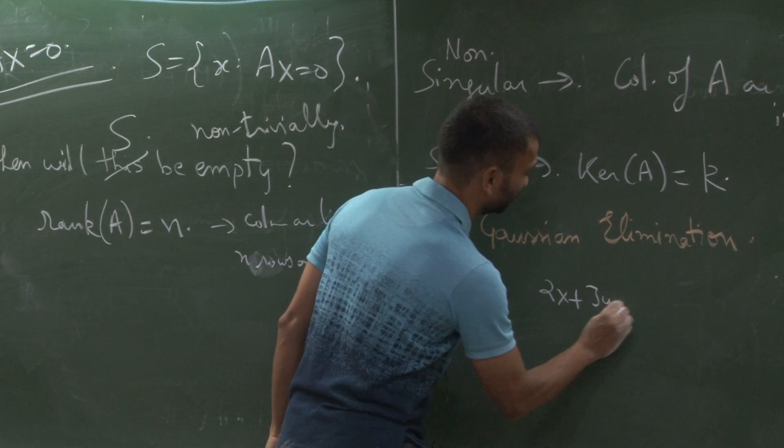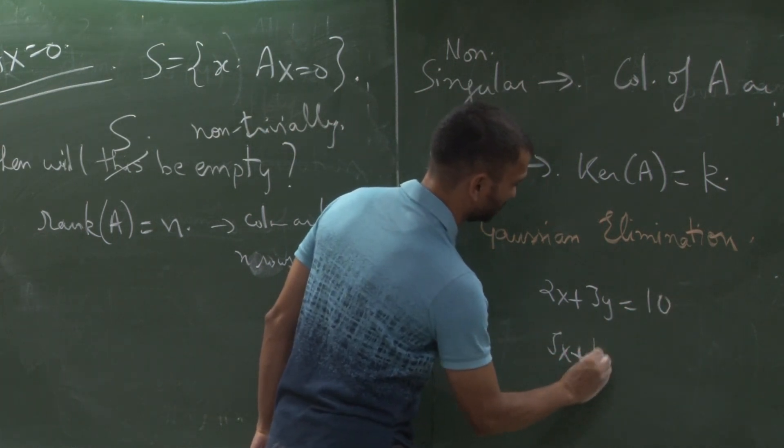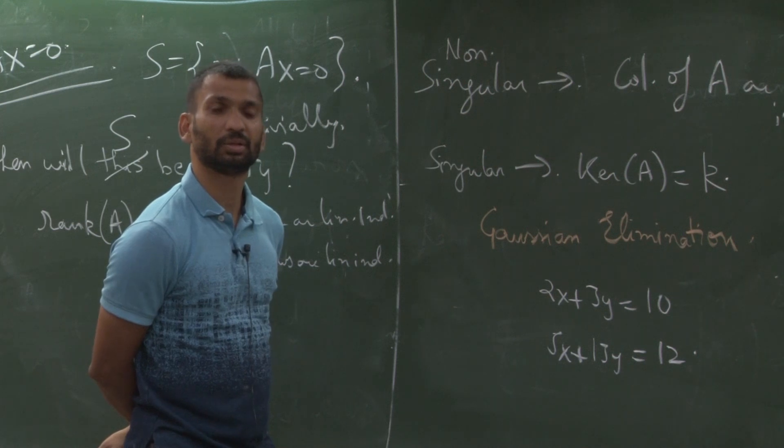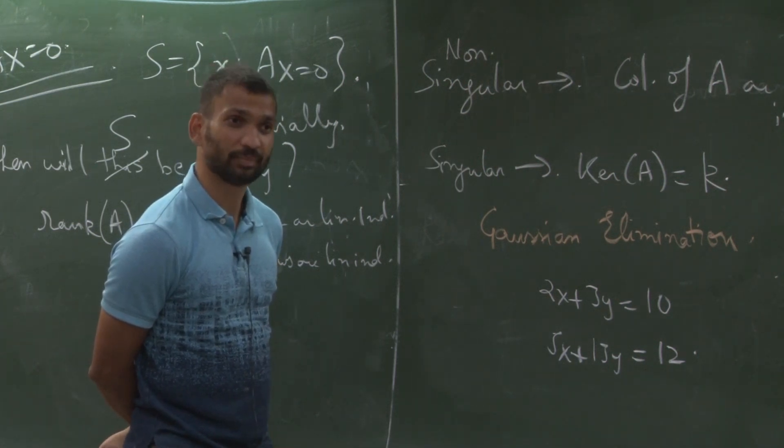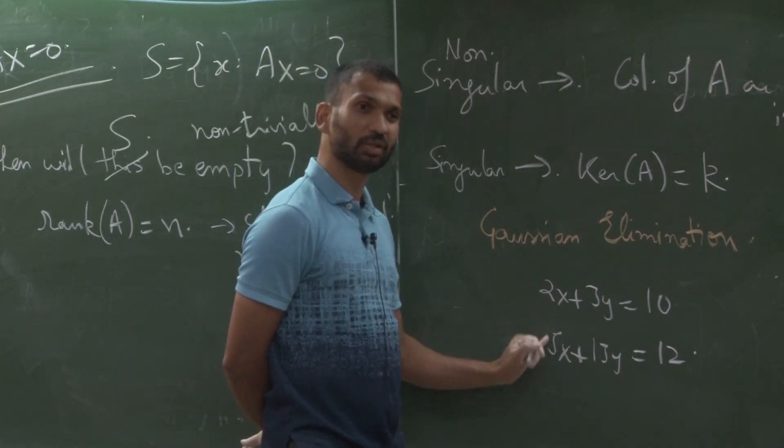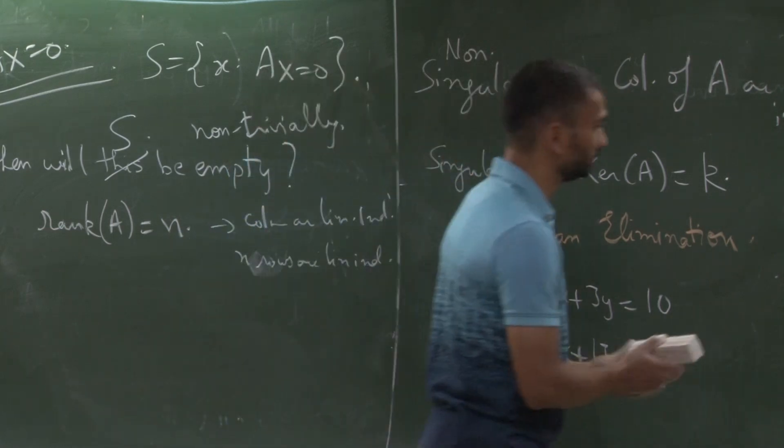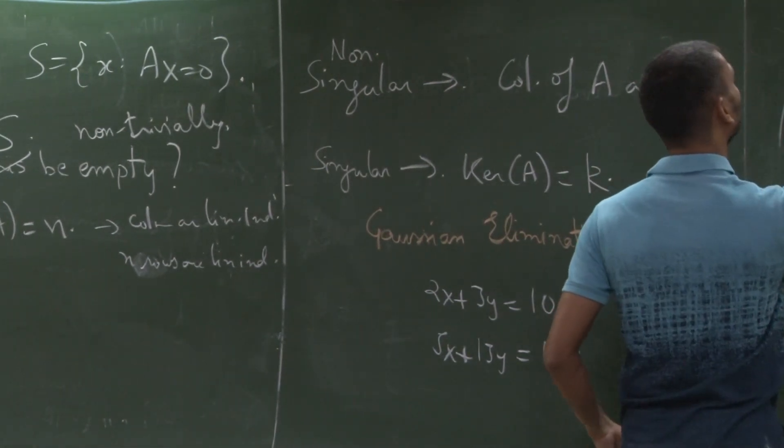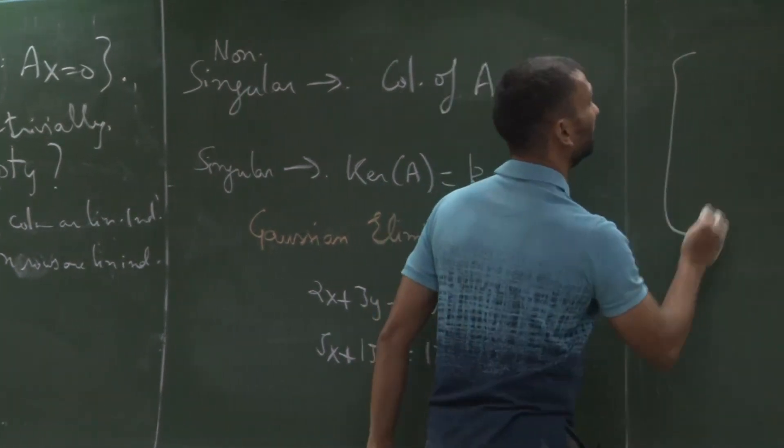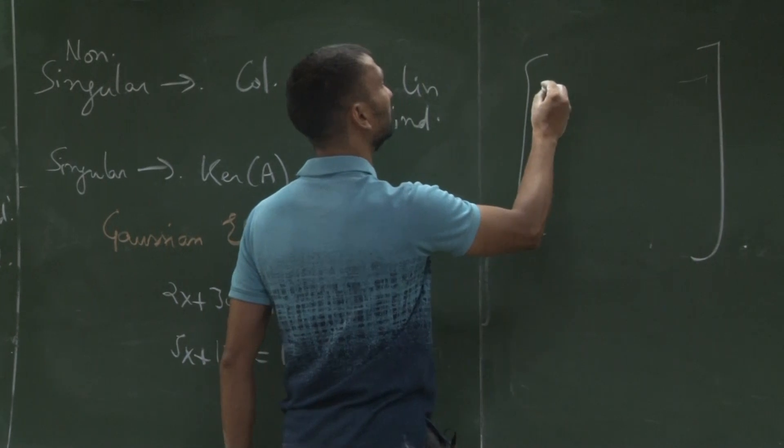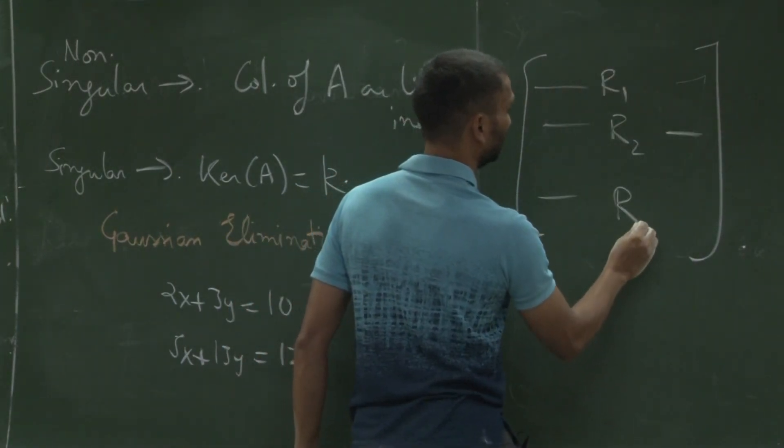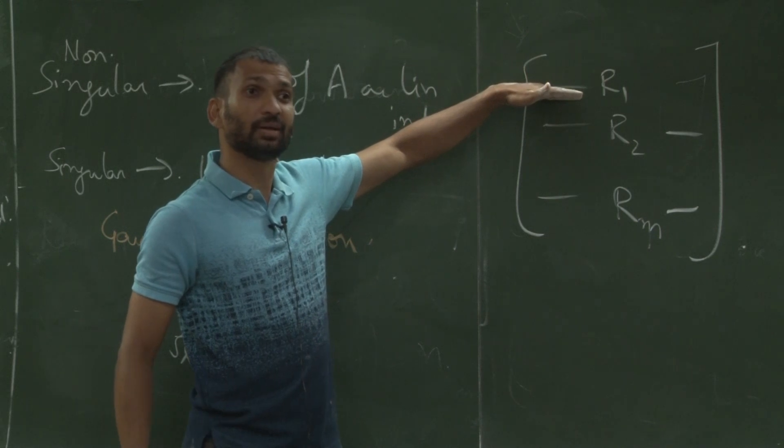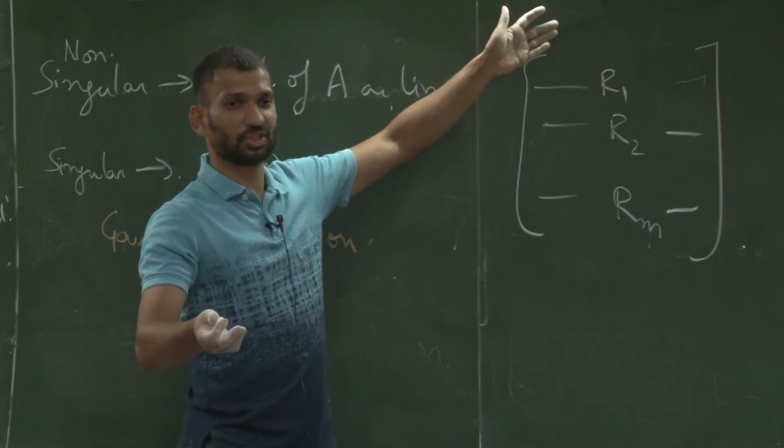So how do you solve this bunch of linear equations? Multiply so that one of the coefficient goes away, right. And if you have seen linear algebra, you have these, how many rows are there?